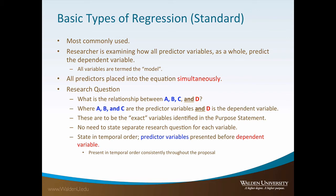Let's now discuss the types of regression. We will first start with standard multiple linear regression, also termed simultaneous regression. This is perhaps the most commonly used regression technique. In standard multiple linear regression, the researcher examines how all of the predictive variables, as a whole, predict the dependent variable. The combination of all predictive variables is termed the model, and you may hear the term prediction model. All predictive variables are placed into the equation simultaneously, which is why standard regression is also called simultaneous regression.